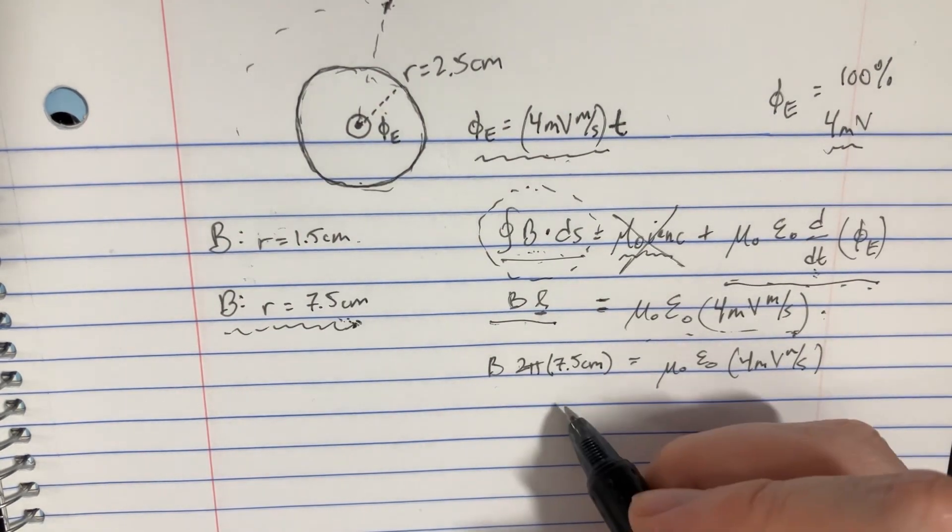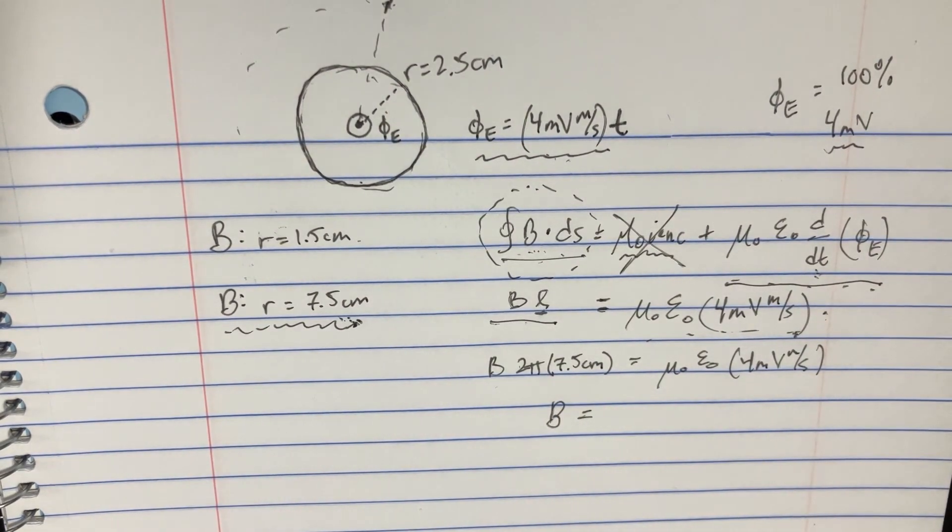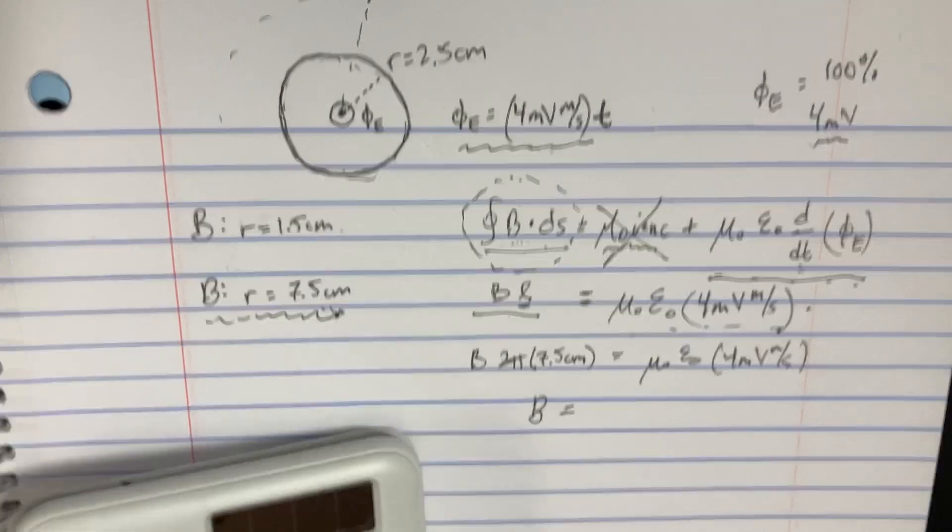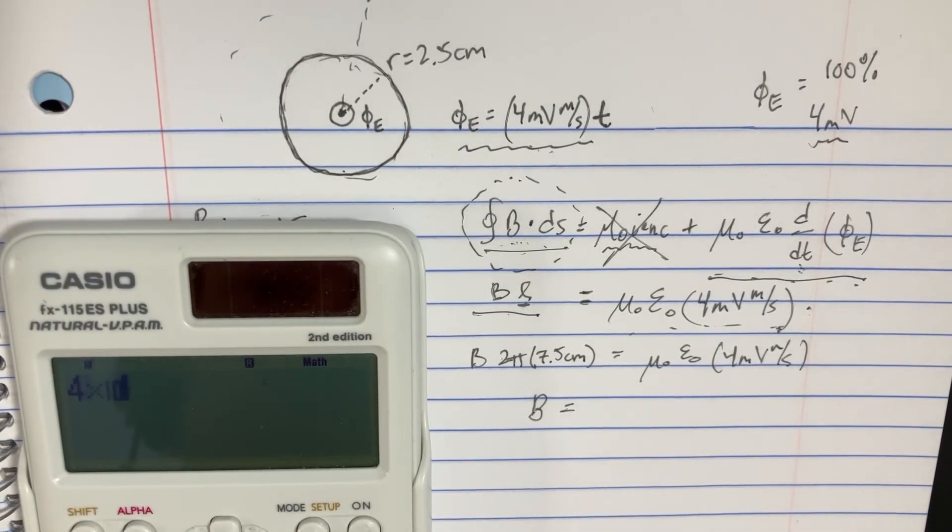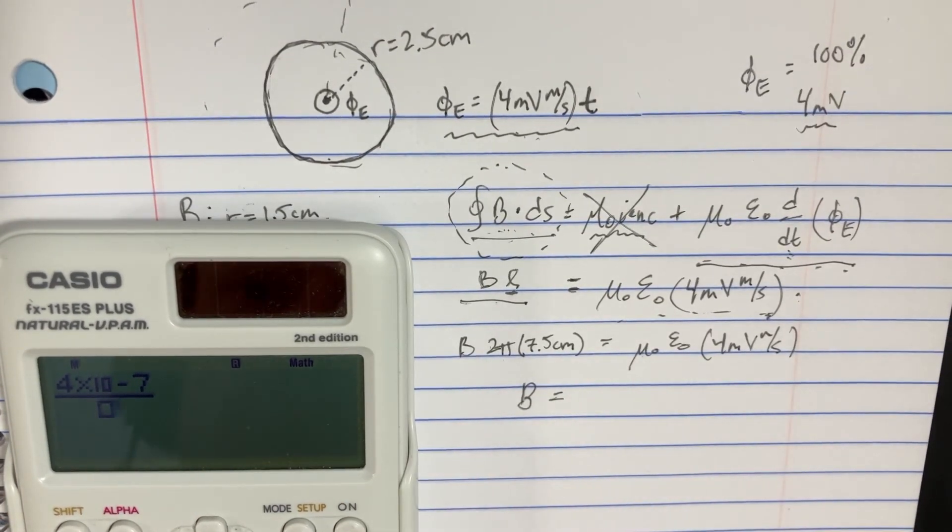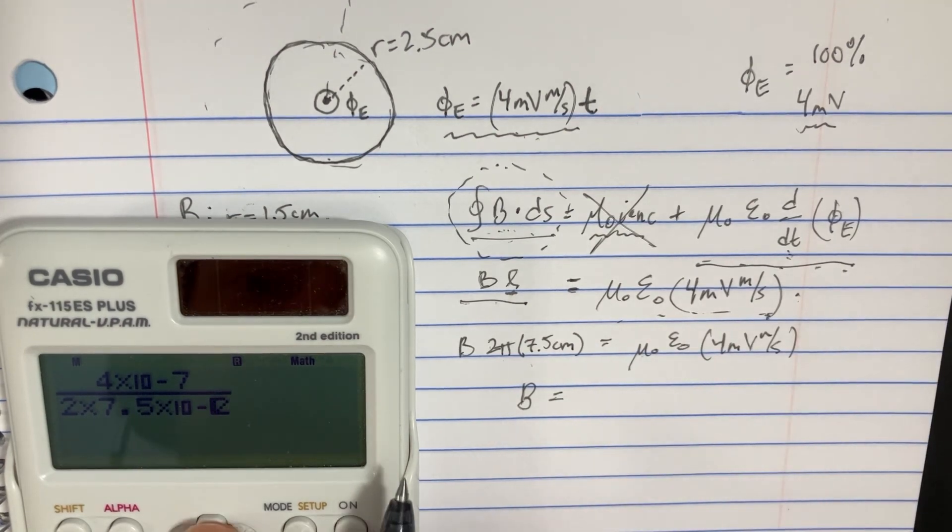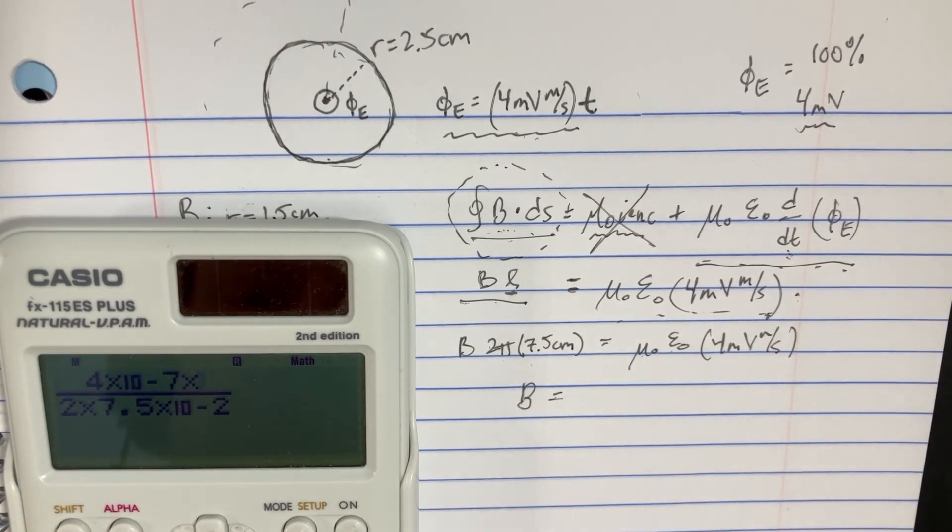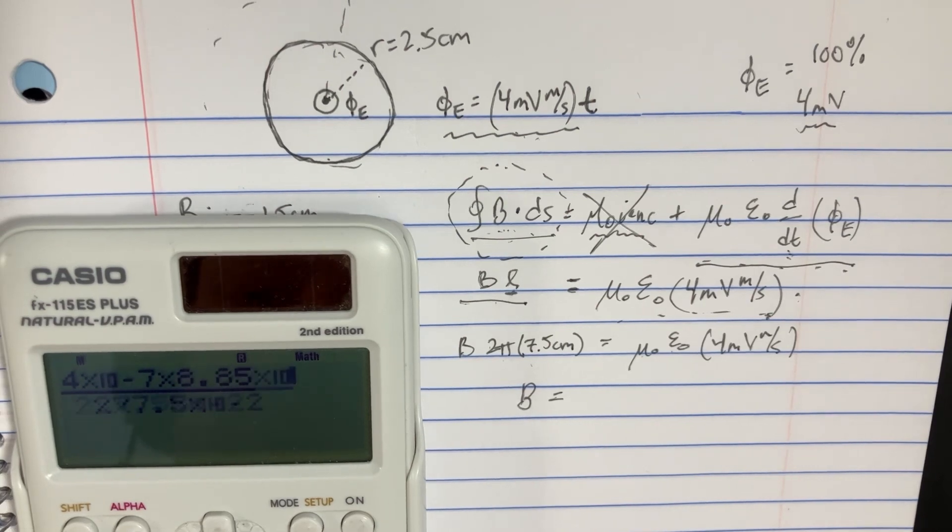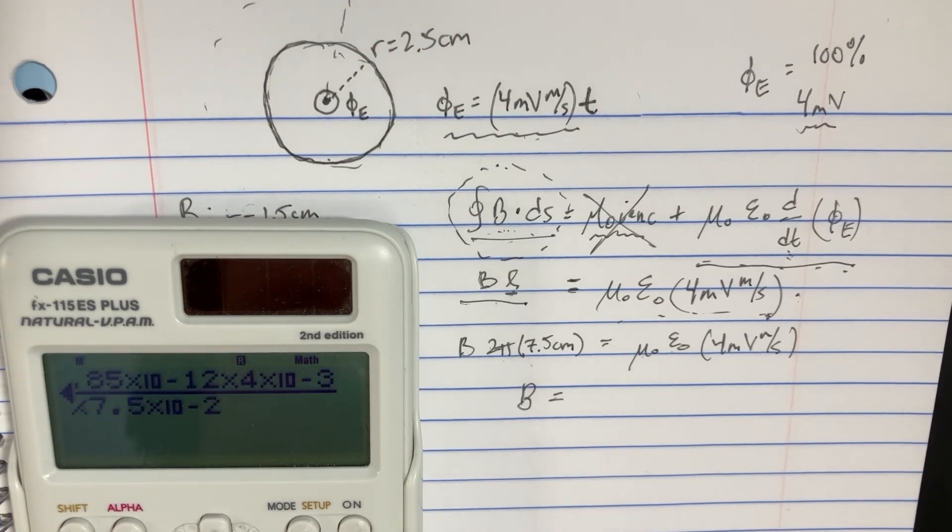So now we could try to solve this, because we'll just get that B equals all this stuff. So you can use 4 pi times 10 to the negative 7. And since there's a pi on this side, we're just going to get rid of the pi's. On the bottom, though, we would have 2 times 7.5, because we're going to divide this and put it on the other side. And then we're going to multiply the top side by the epsilon naught, which is 8.85 times 10 to the negative 12. And then we have 4 millivolts per second.